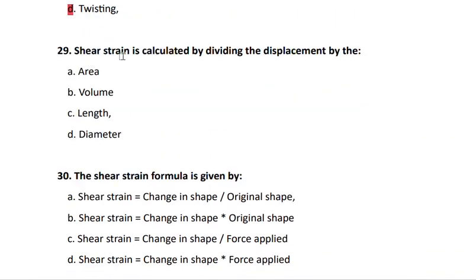Question 29: shear strain is calculated by dividing the displacement by the length. Question 30: strain is the deformation — displacement divided by the length of the material. The shear strain formula is the change in shape divided by the original shape, which is the displacement.